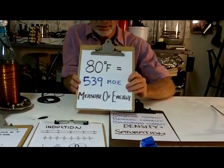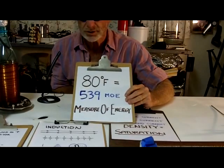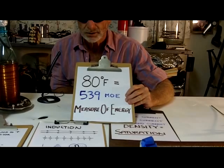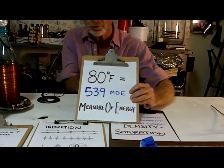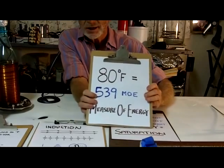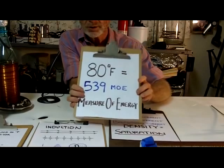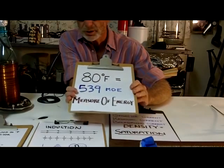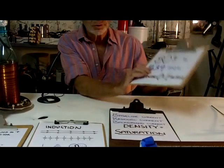So here you see 80 degrees Fahrenheit is actually 539 MOE measures of energy. When it's 80 degrees outside, there's an enormous amount of energy. And even at 100 degrees below zero, the temperature would still be 359 MOE measures of energy.